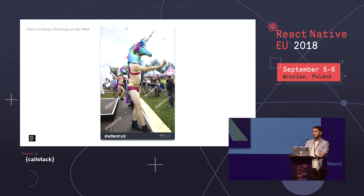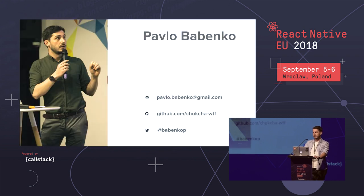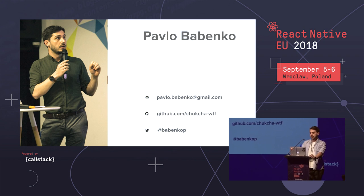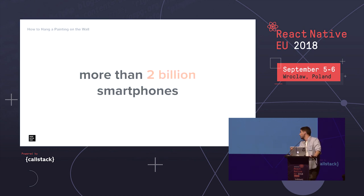We'll be building a simple application to handle paintings on the wall and learning how to deal with AR technologies. My name is Paolo Babenko. I started as a Ruby on Rails developer a long time ago, then moved to Ember.js and then dove into mobile development with the first versions of React Native. I work as a React Native consultant at XE and as a three-time CTO at Perfect Chinese.